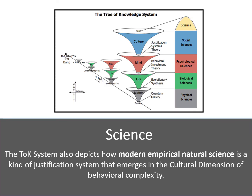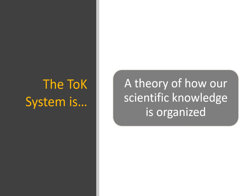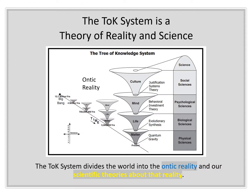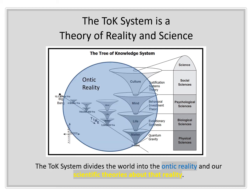The Tree of Knowledge System also includes a framework for understanding modern science. Specifically, it suggests that modern science is a kind of justification system that emerged in the 16th and 17th centuries based on measurement, observation, and experimentation, and was defined against the scholastic metaphysical approaches that characterized the academy at the time. Indeed, the Tree of Knowledge is a theory about how our scientific knowledge is organized, dividing the world into ontic reality and our scientific theories about that reality.